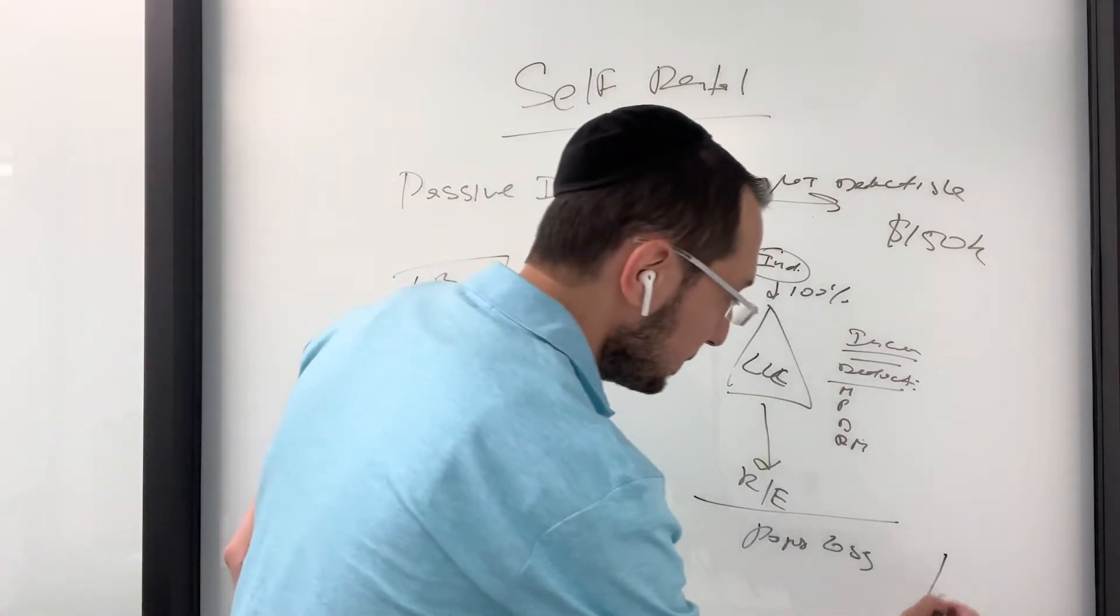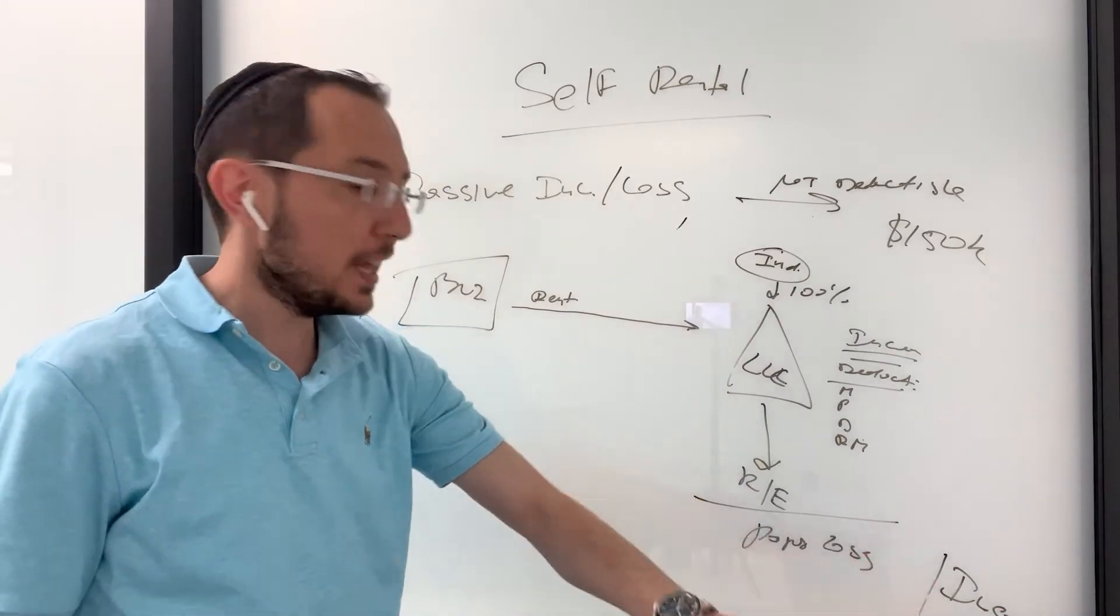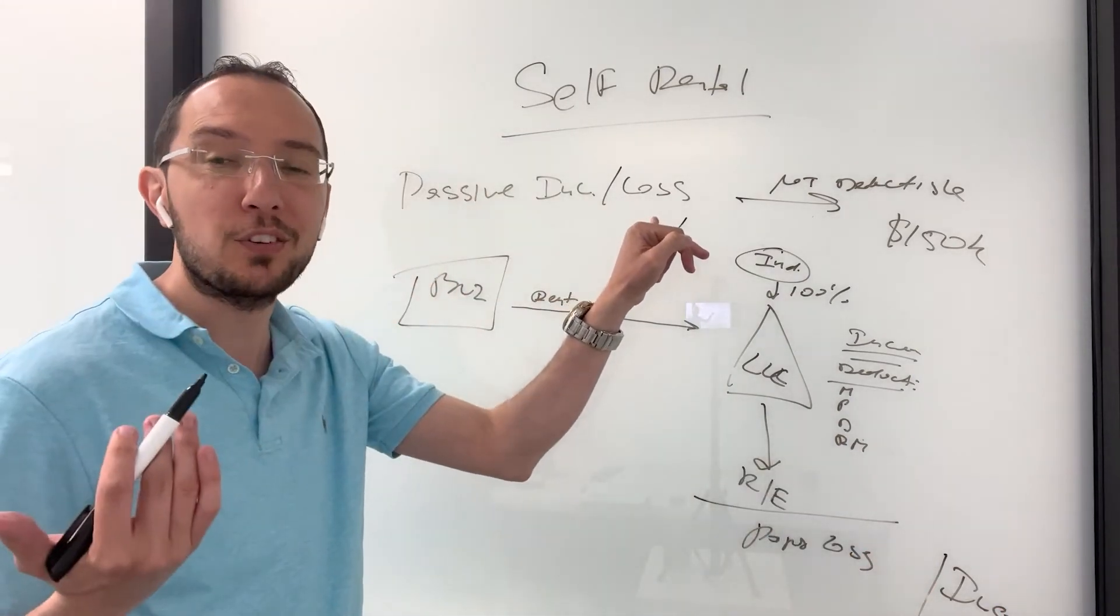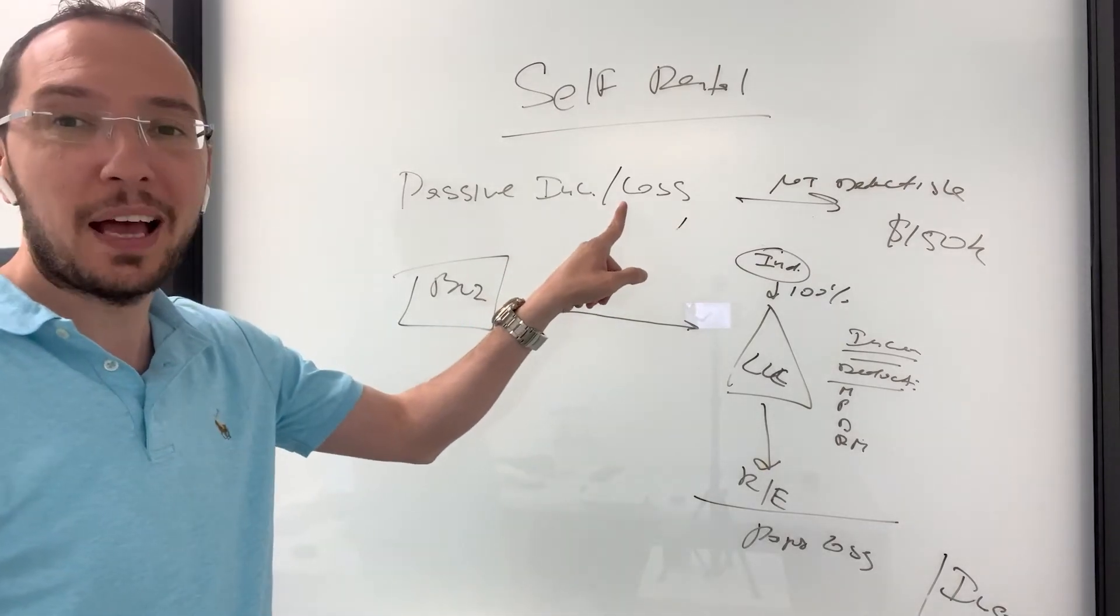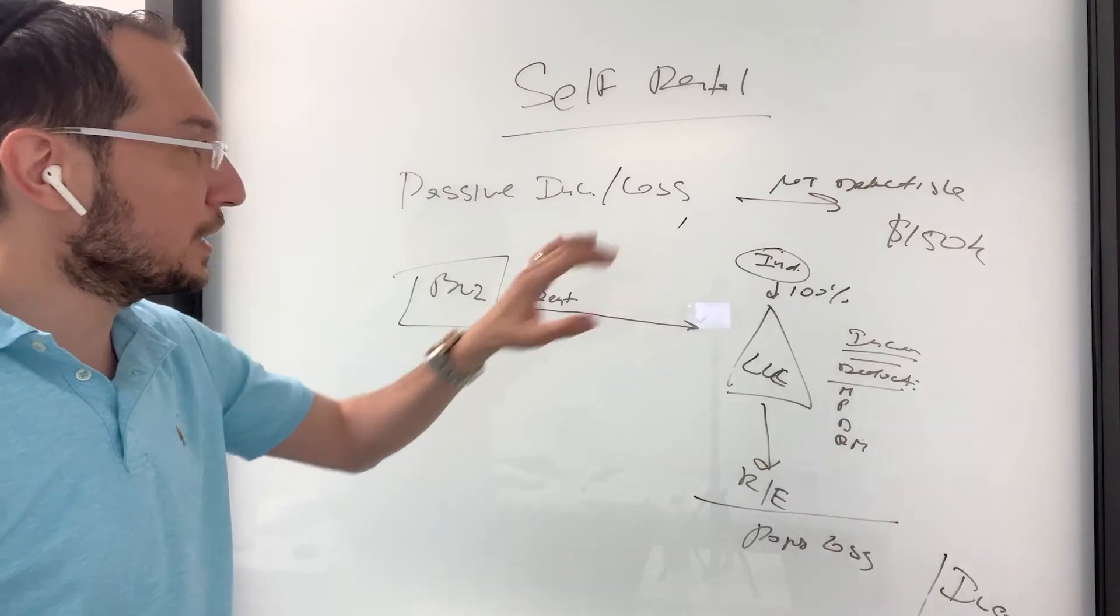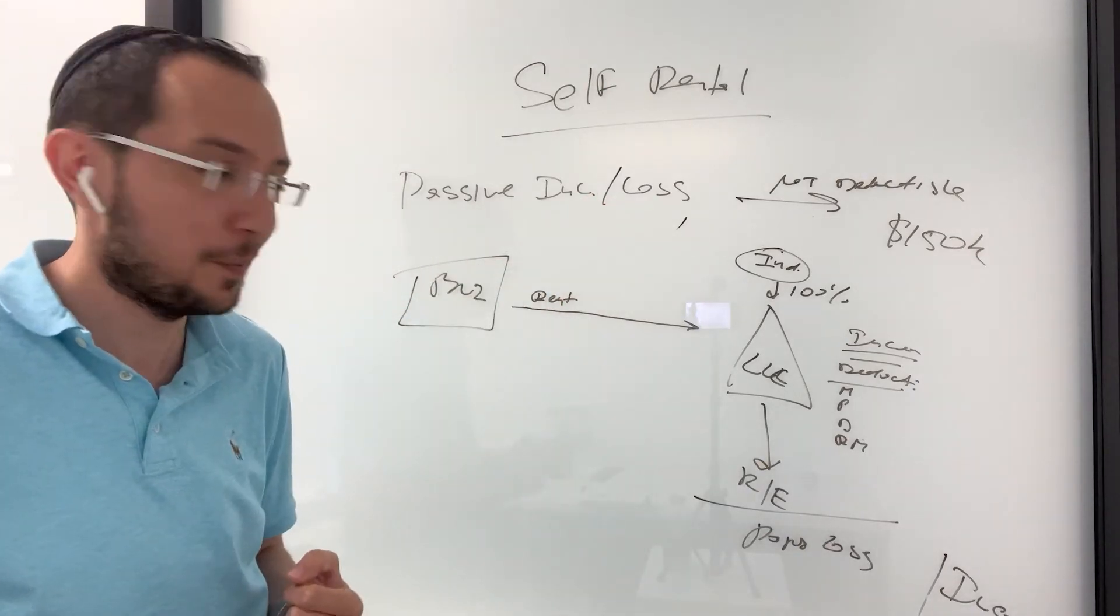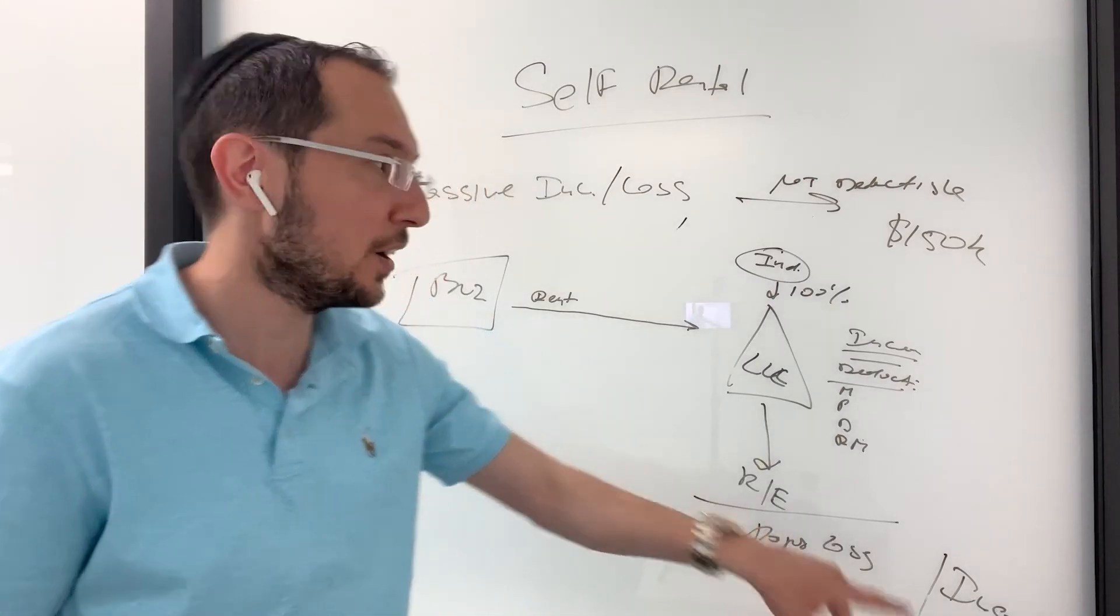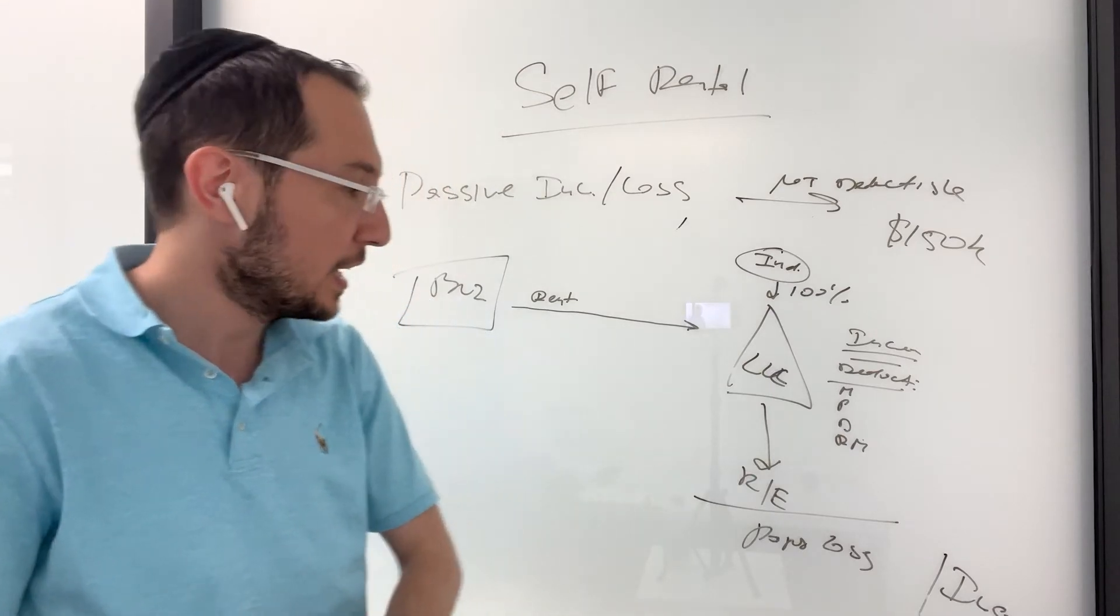And if you're going to have income, IRS says, nope, you can't use this income to offset passive losses that you have from other rental activities. Remember what I said earlier, if you have a passive loss from other activities, you can't deduct it unless you have other passive income. Well, if your self-rental is going to produce net income, IRS says, nope, you can't use it. They really screw you in both ways.